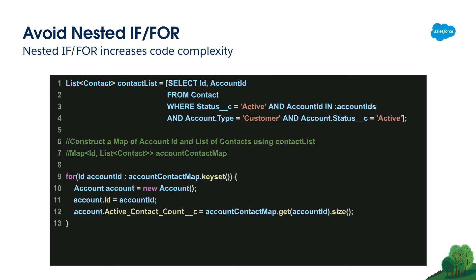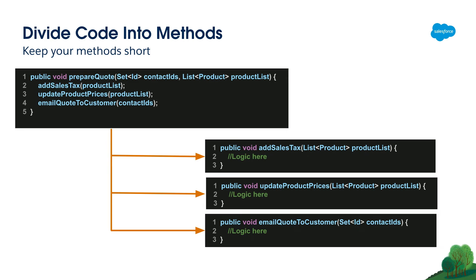Another best practice for design is to divide your code into methods. If someone reviewing your code opens a method and finds 200 or 300 lines of code, it's going to be hard to troubleshoot or read. So it's important to divide your code into methods — even small pieces of logic can be extracted. This way, the person troubleshooting or reviewing the code can focus on one specific piece rather than reading 200 or 400 lines at once.